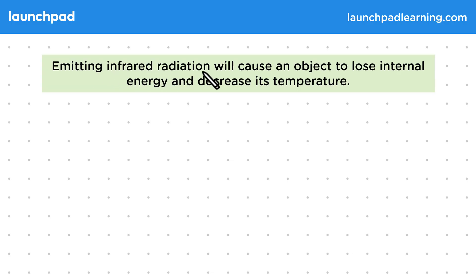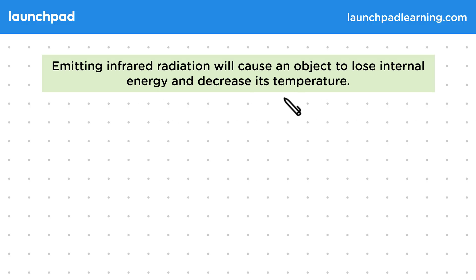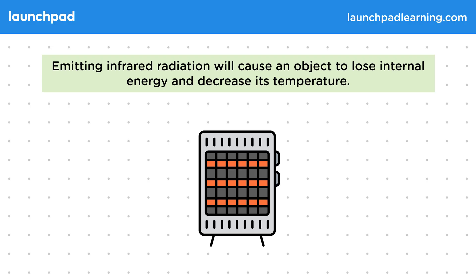Emitting infrared radiation will cause an object to lose internal energy and decrease its temperature. This is a behaviour of all objects, but it's easiest to observe in things like a hot meal or drink cooling down, or a warm person standing in a cold room.